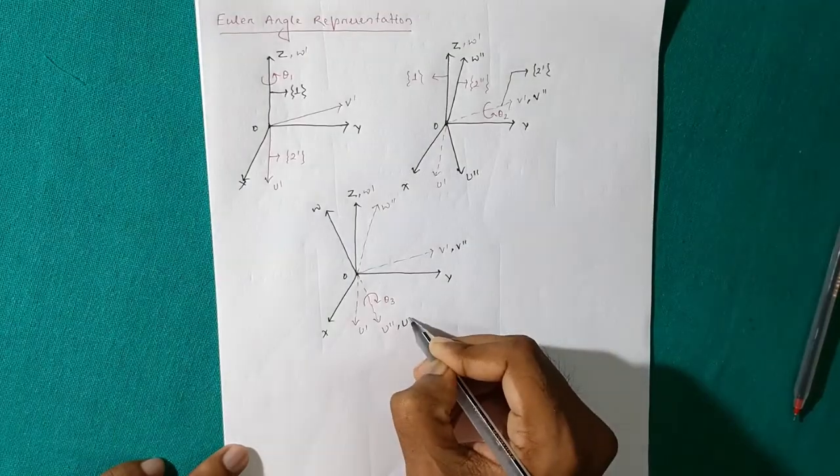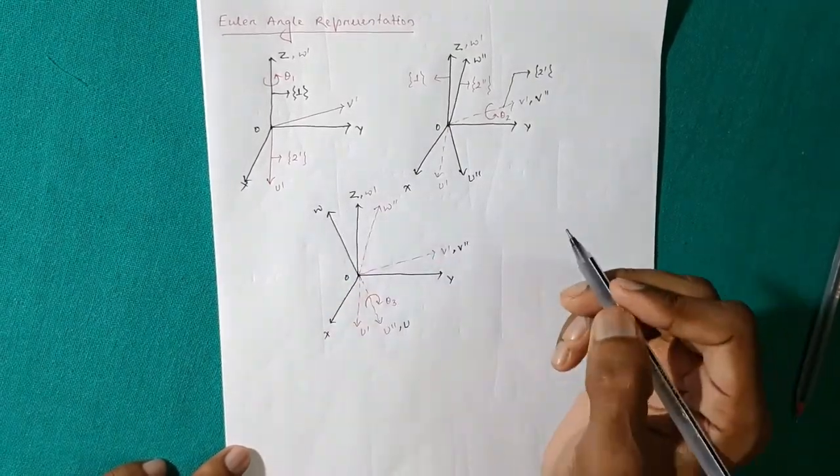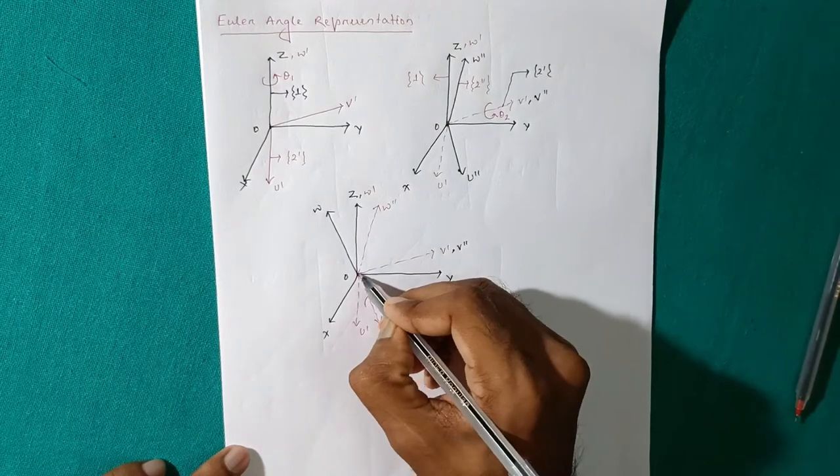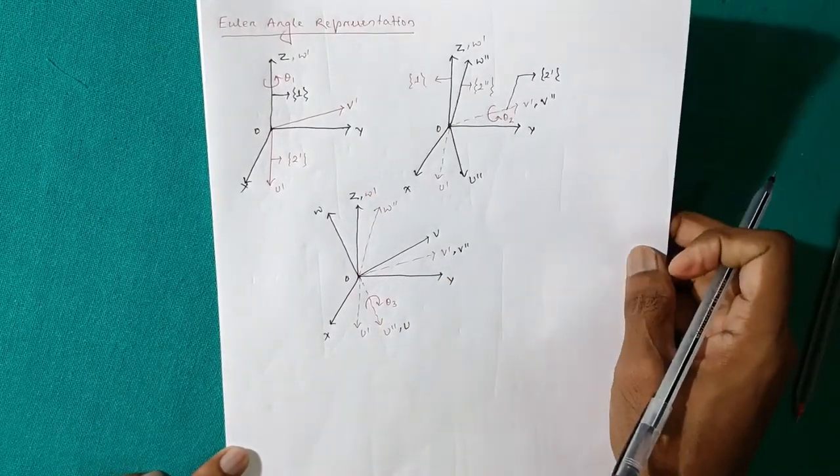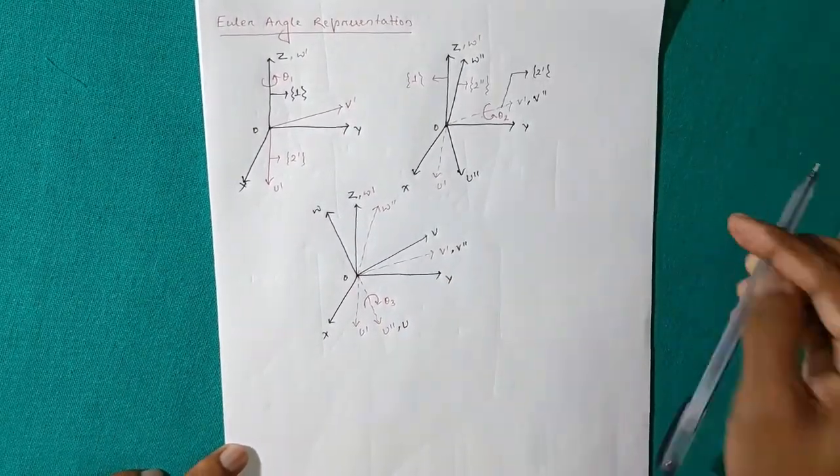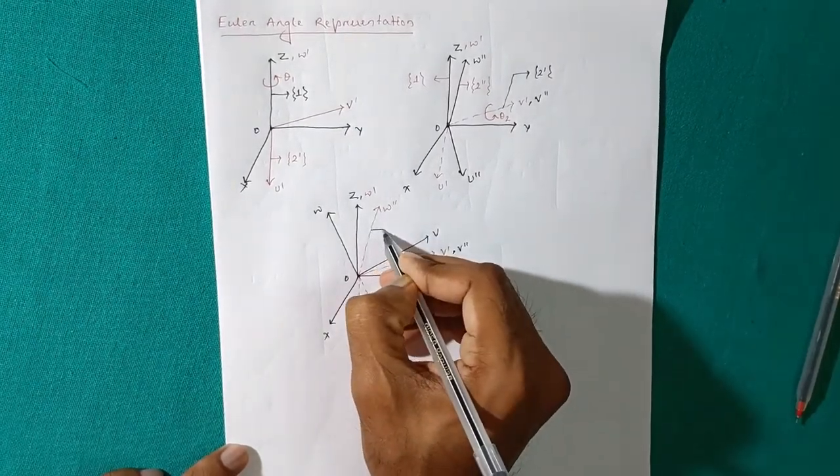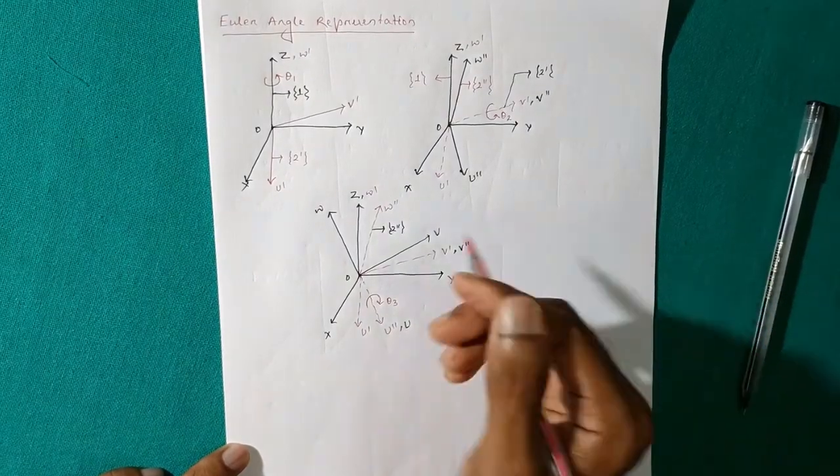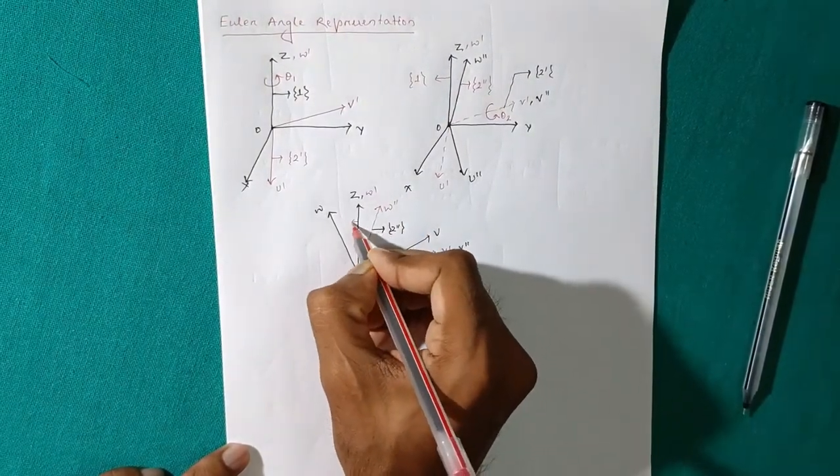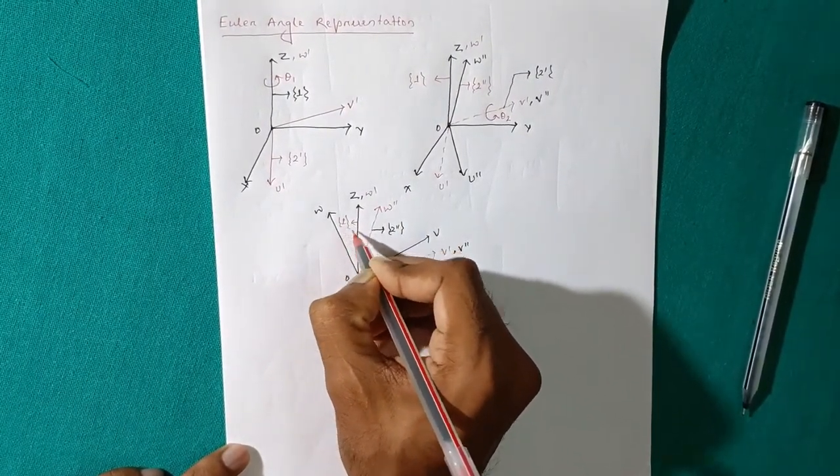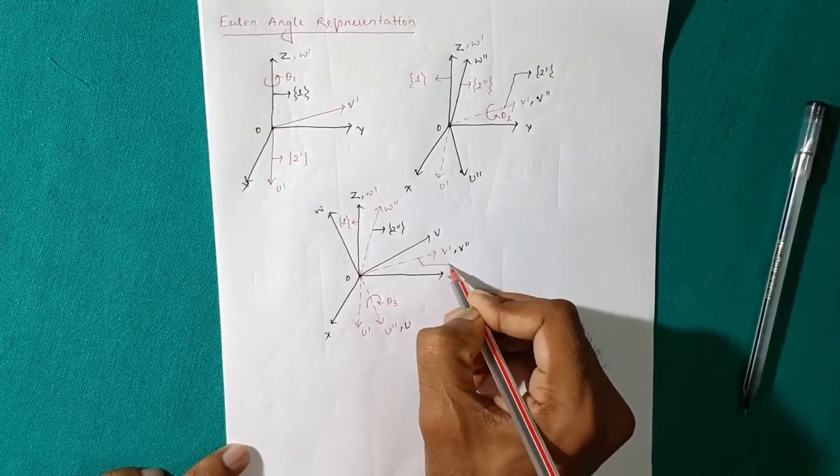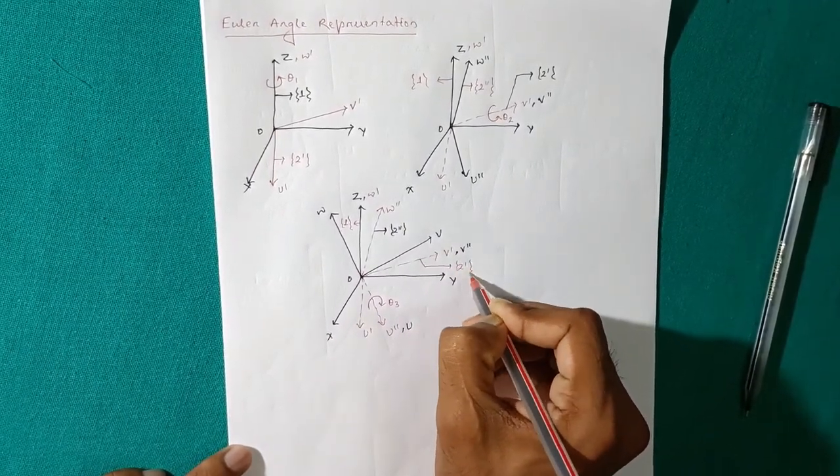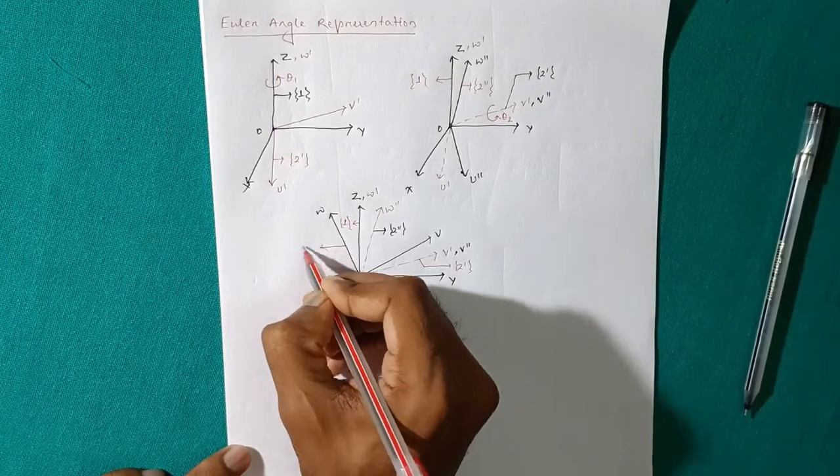So this is U, this is W, this new axis of the vector V prime, clear? Here, this is frame 2 double dash, the base frame is 1, and this frame is 2 dash, and the new frame is 2.